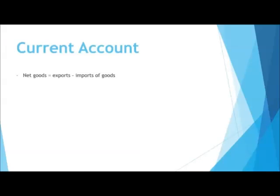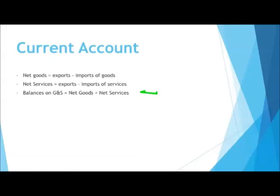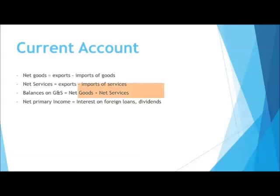Let's look at the components. The first is net goods — exports minus imports of goods. We also have net services, things like tourism and education. So not only do we have imports and exports of goods, but we also have a separate category for services. Another very important section is net primary income, and the big ticket items here are the interest on foreign loans and dividends and other one-way transactions paid to and from Australia. The interest on foreign loans is by far the biggest impact item.